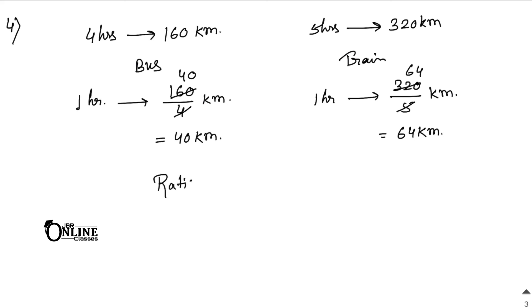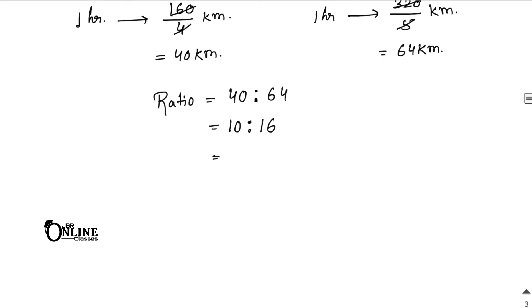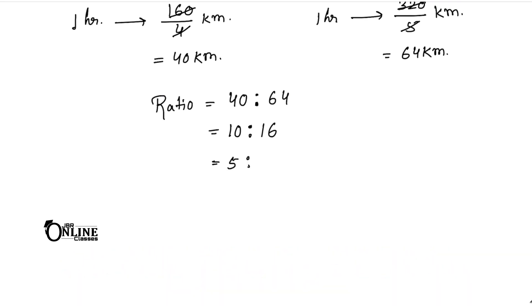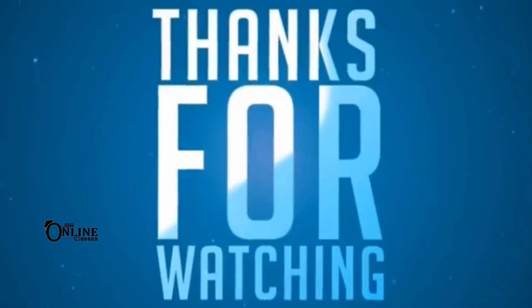The ratio of bus to train is 40 : 64. Divide both by 4: 10 : 16. Divide again by 2: 5 : 8. So the final answer is 5 is to 8.